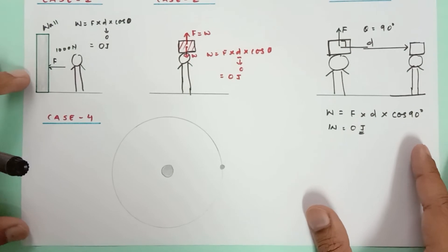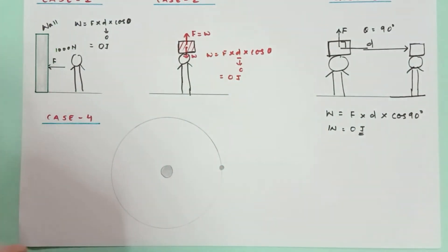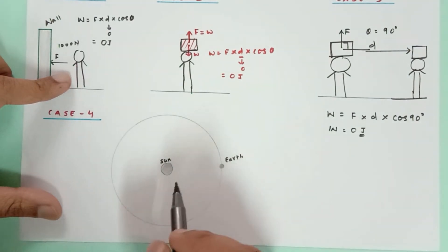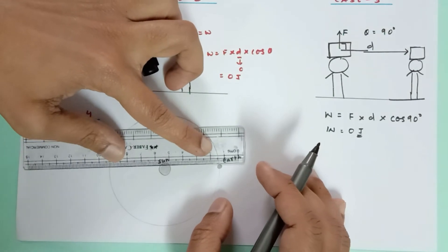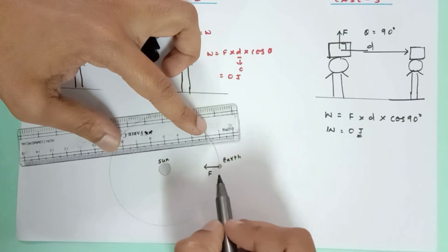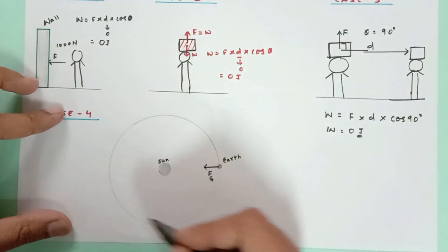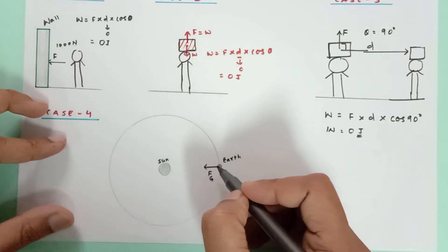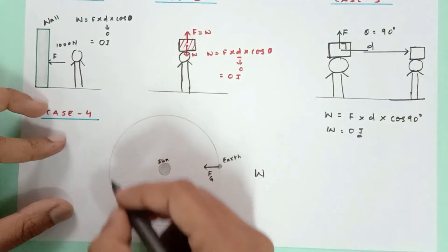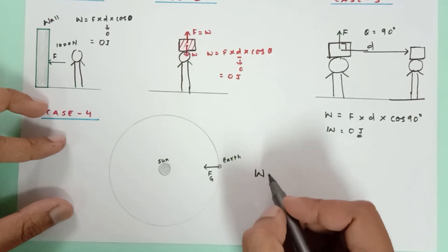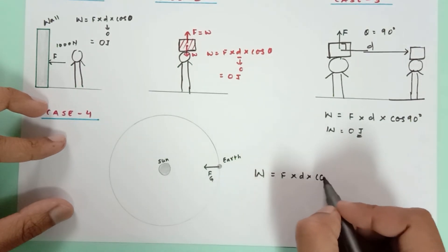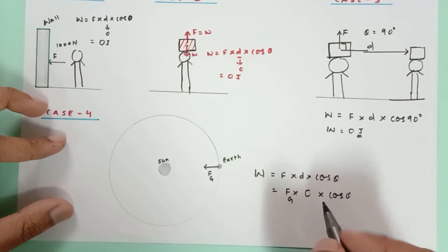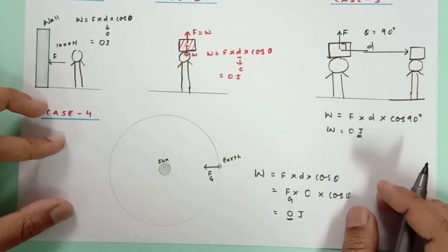Another zero-work case: an electron orbiting a nucleus, or Earth orbiting the Sun. The gravitational force is directed inward toward the center. After one complete revolution, the displacement is zero. So work done = F × d × cosθ = 0, since the net displacement is zero.